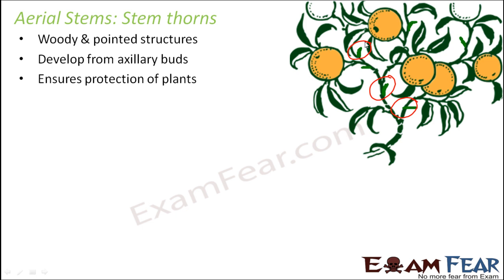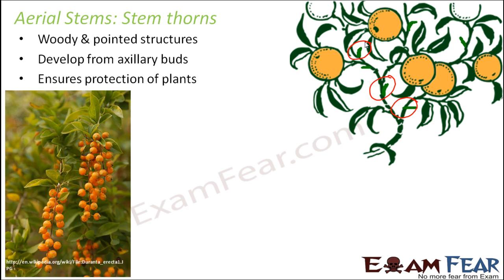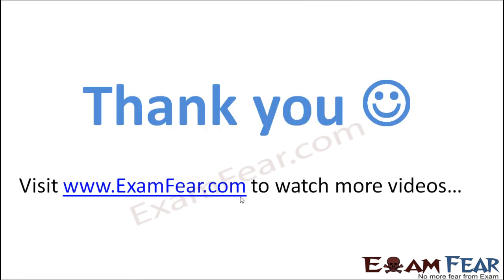In citrus plants, the stems are modified to form thorns, but in cactus or rose plants it is not the stem that forms the spine. Stem thorns develop from axillary buds — the buds present at the axils. When an insect or animal tries to attack the plant, they get hurt by these thorns, providing protection. This is how the stem modification of thorns gives defense to the plant.